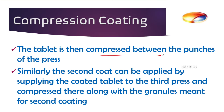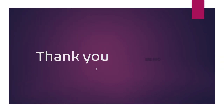The tablet is compressed between the punches of the press. Similarly, a second coat can be applied by supplying the coated tablet to a third press and compressing it along with the granules meant for the second coating. So we have completed sugar coating, film coating, and compression coating. Enteric coating and microencapsulation — the last two types of tablet coating — will be discussed in the coming classes.